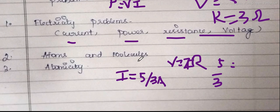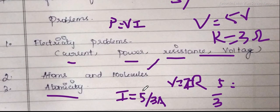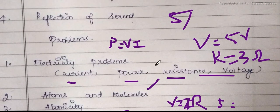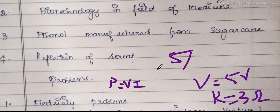We can cover atoms and molecules — atomicity. We can segregate a list of compounds that are diatomic and triatomic. We will cover all three of these. We will prepare your book back questions. Regarding your social science important questions, tell us in the comments.